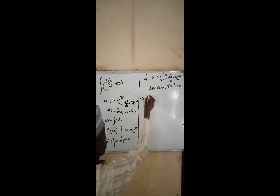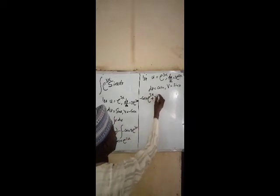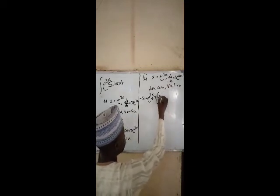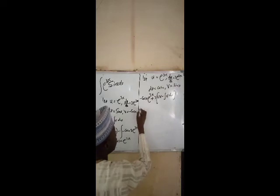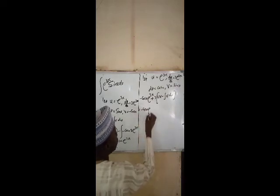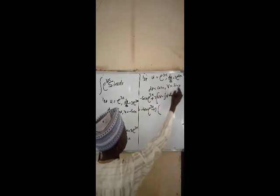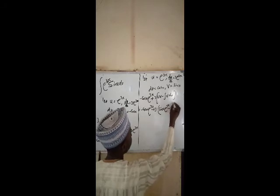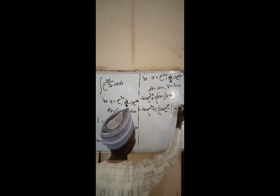Now we also apply the same formula here. We have minus cos x times e to the power of 3x plus 3, and we simplify this as uv minus the integral of v du. We substitute this value in: our u is cos x, our v is sin x. Therefore we have sin x times e to the power of 3x, minus the integral of v which is sin x, times du which is 3e to the power of 3x.